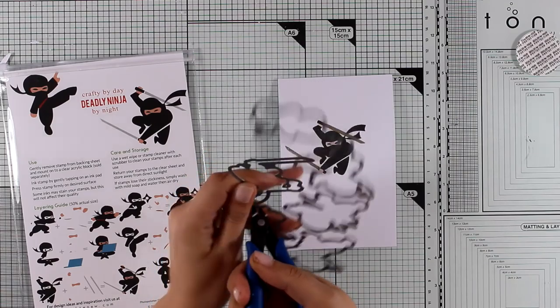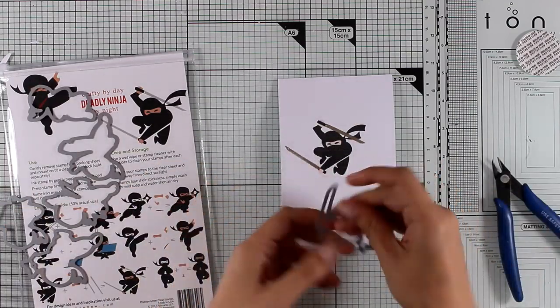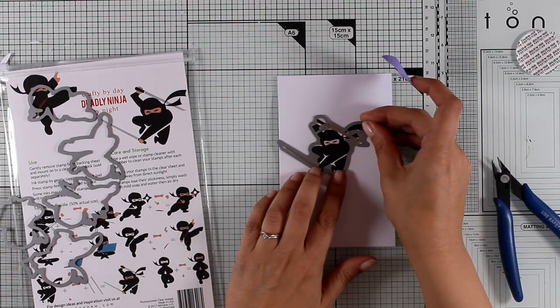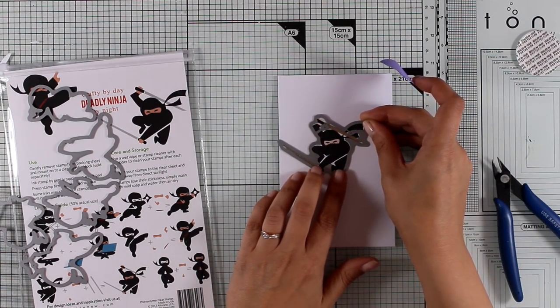And here is a tip: you might want to stamp the ninja, cut him out, and then stamp the swords—the blades of your swords—because this might be an issue if you don't align those blades correctly.